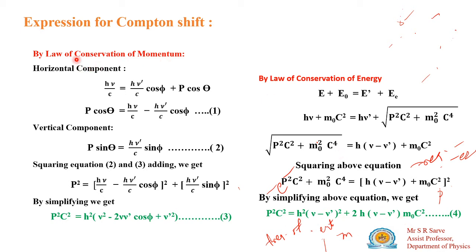By the law of conservation of energy we get the first equation for p squared c squared. Similarly, if we use the law of conservation of momentum, we will obtain another expression for p squared c squared.